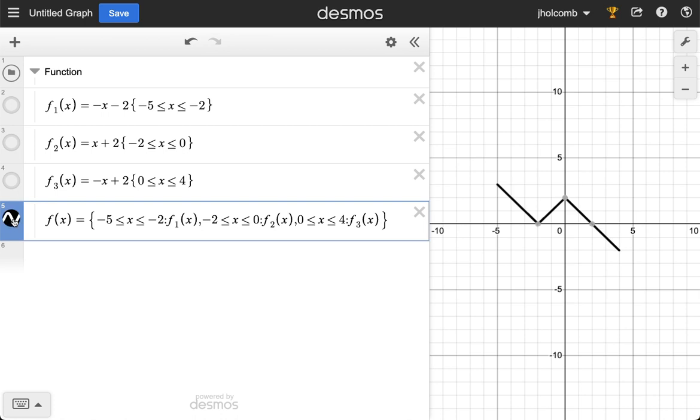What we're going to do next is put a point on our new function. So I'm just going to do it with a number first, and then we'll do it with a slider. I'm just going to say, hey, I want my x value to be one, and then I want to know what my function value is at one. There we go.